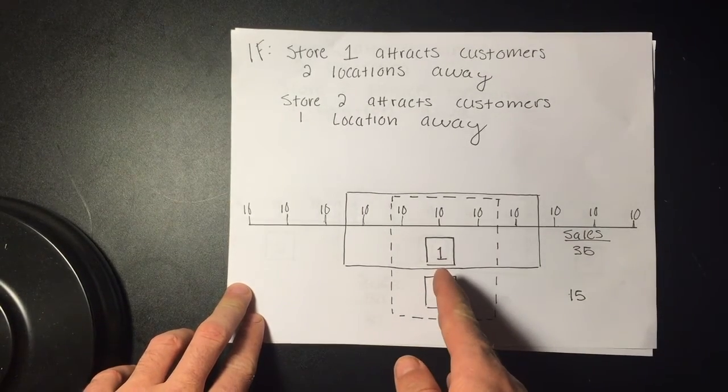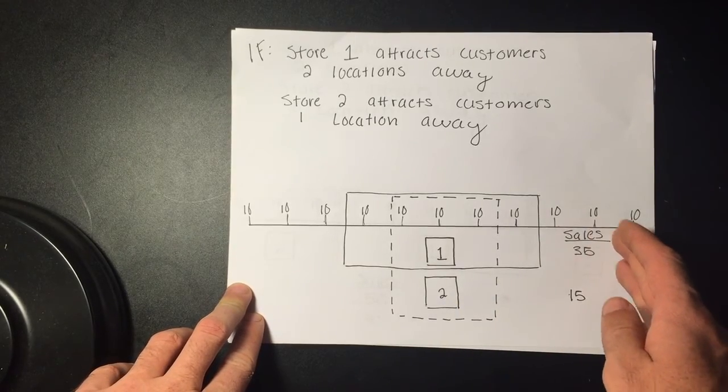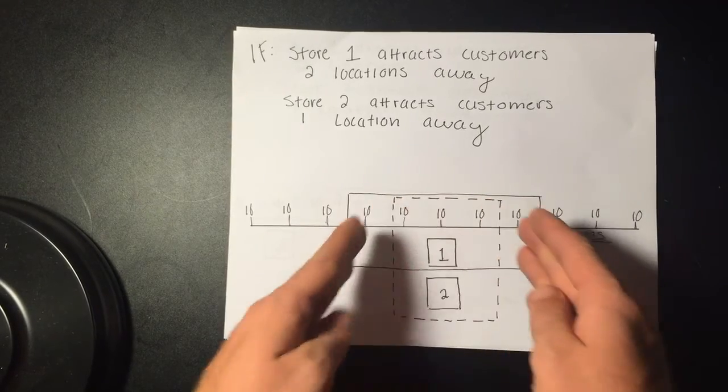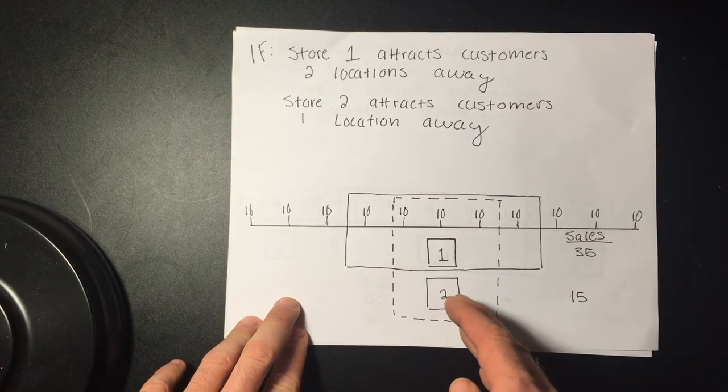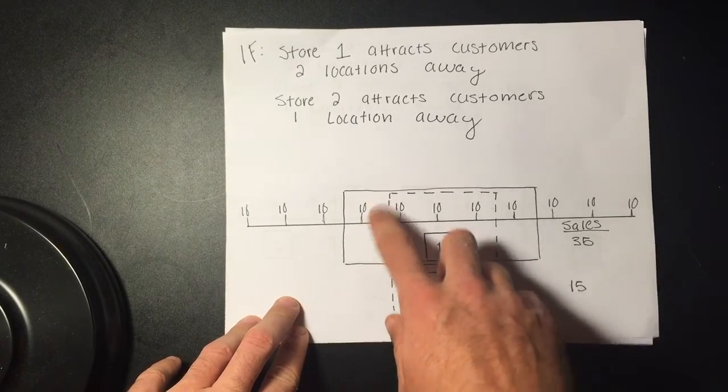If both stores stay in the center, then store 1 will maximize their sales at 35, since they will receive all consumers from the outside, and then half of the ones from the inside that store 2 will also attract. Store 2 will only attract 15 of the 30 customers within this range.